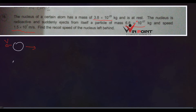Let mass of nucleus be M and its recoil velocity be V. Let mass of particle be m and its velocity be v. We need to find V. We can apply the law of conservation of momentum: total momentum before the process equals total momentum after the process.